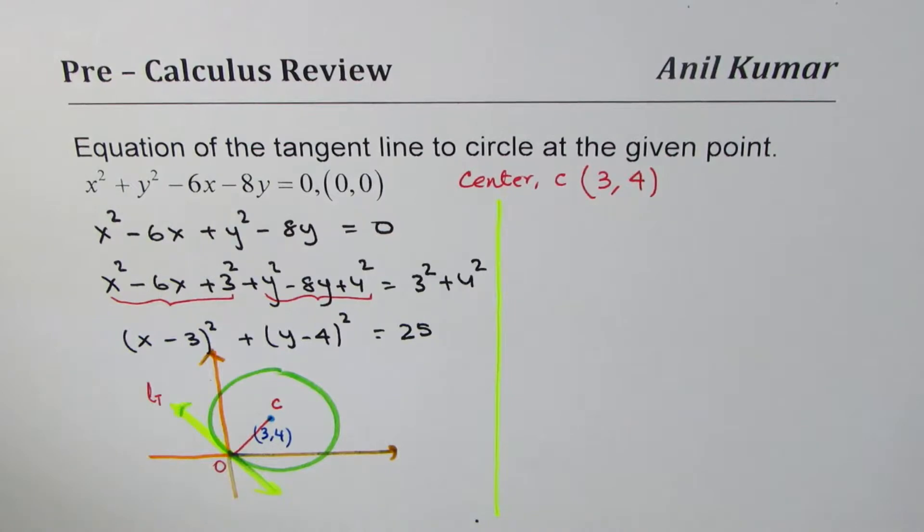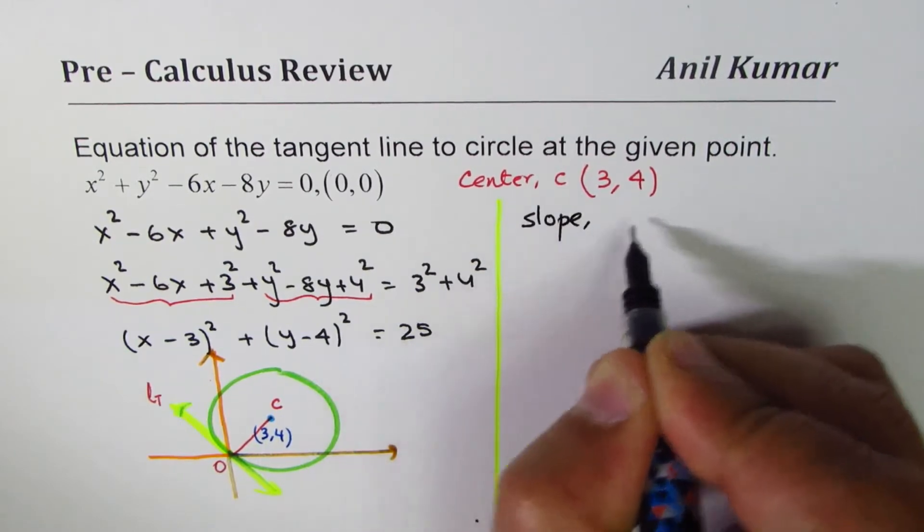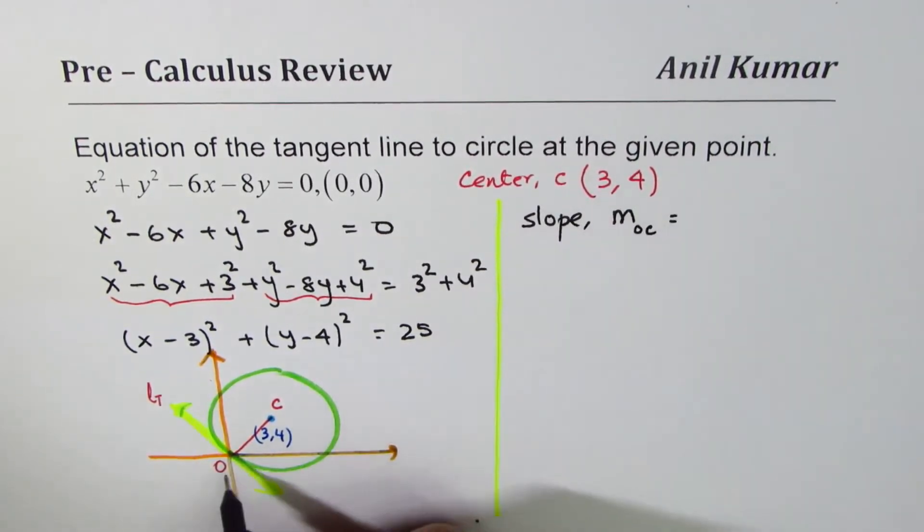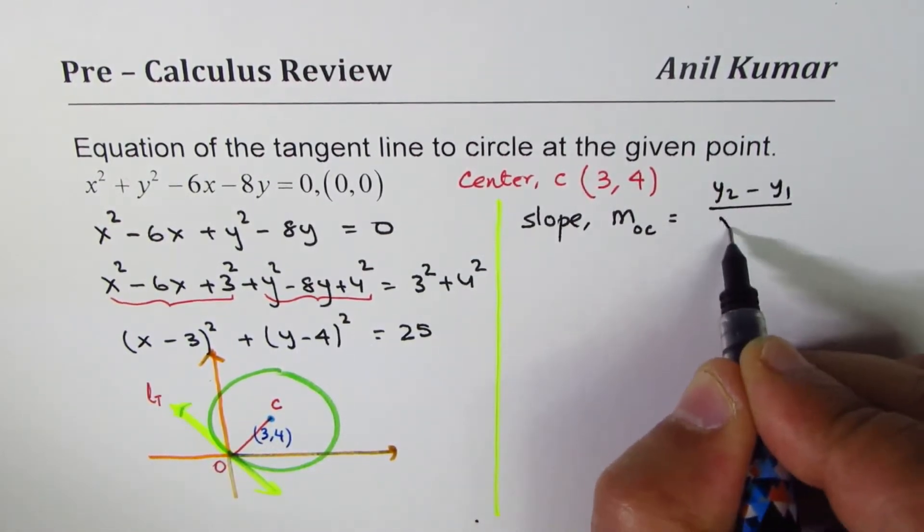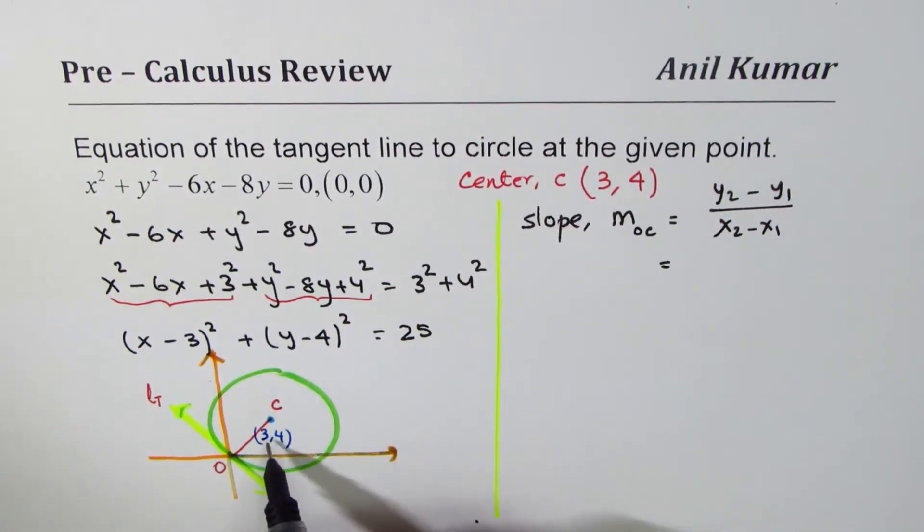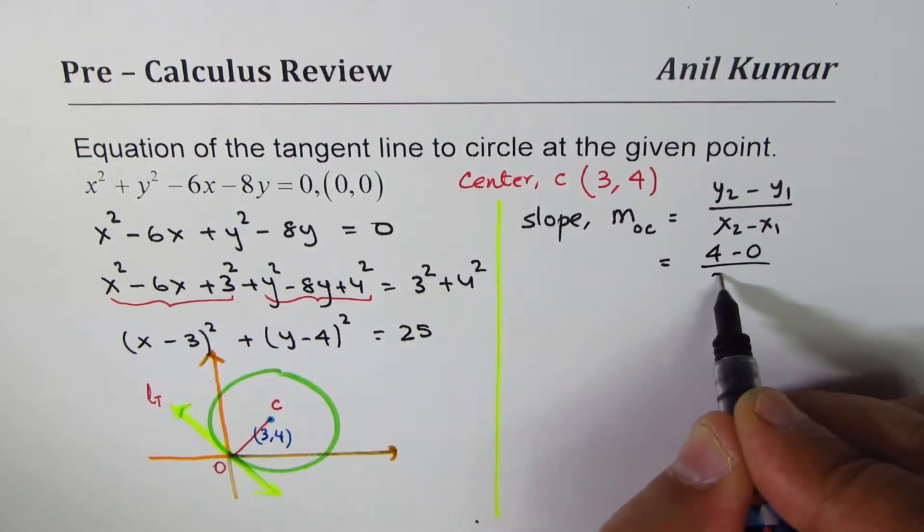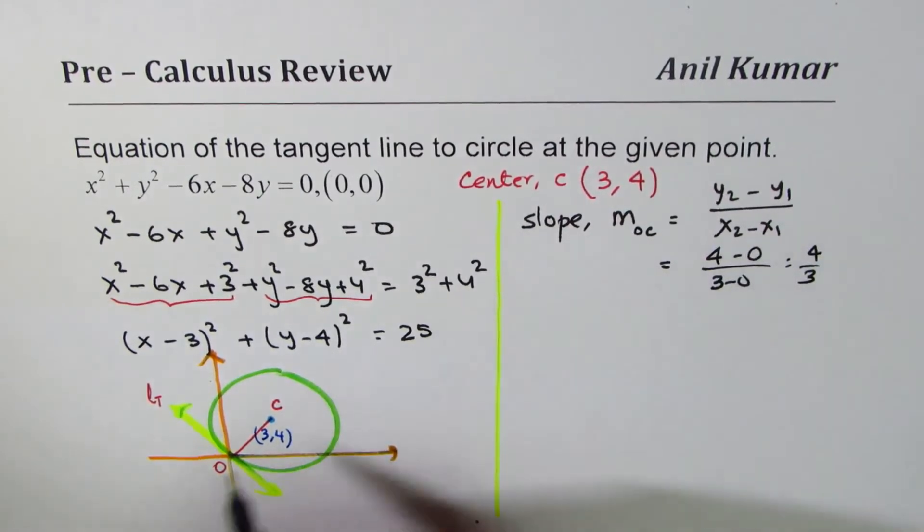So the steps involved are very simple. As you know, we'll first find slope of OC. So slope of OC, formula is (y₂ - y₁)/(x₂ - x₁). Now the point is (3,4), this is (0,0), so we can write this as (4 - 0)/(3 - 0) so it is 4/3.